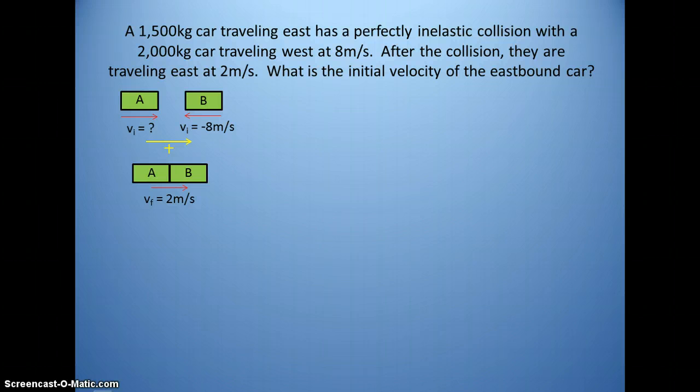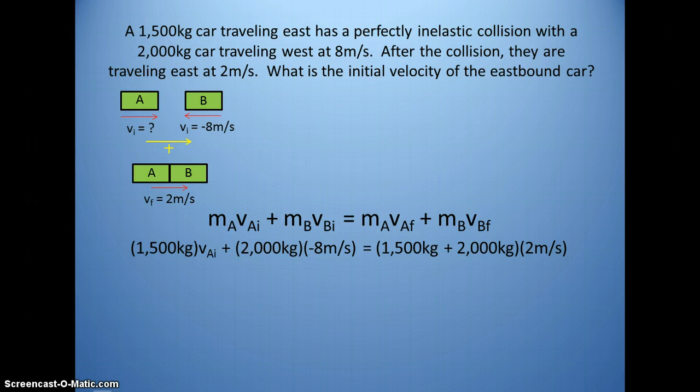So, basically, we're going to write out the conservation of momentum math rep, as you can see here. We'll substitute in our values. You'll notice on the right-hand side that I have simply added the masses together and treated them as one object. If they are stuck together, they automatically have the same final velocity. Here, we solve for the initial velocity of object A, and we get that it must have been moving at 15.33 meters per second. Pretty straightforward math rep, pretty straightforward to substitute into and to solve.